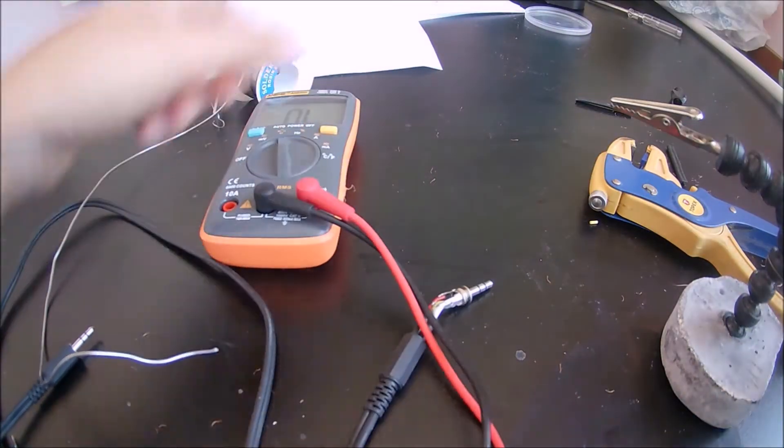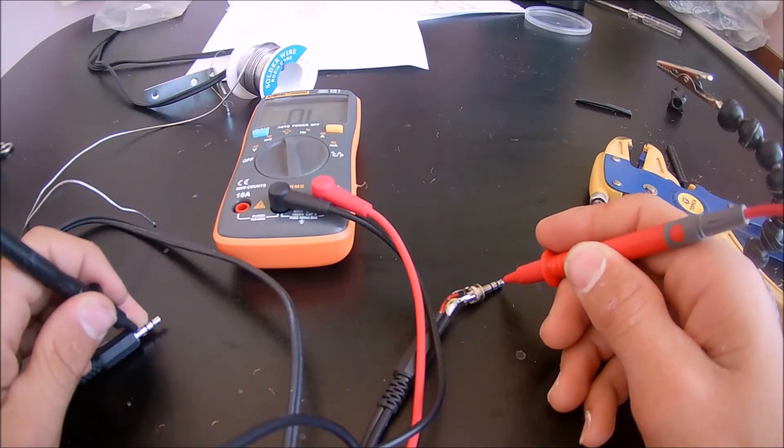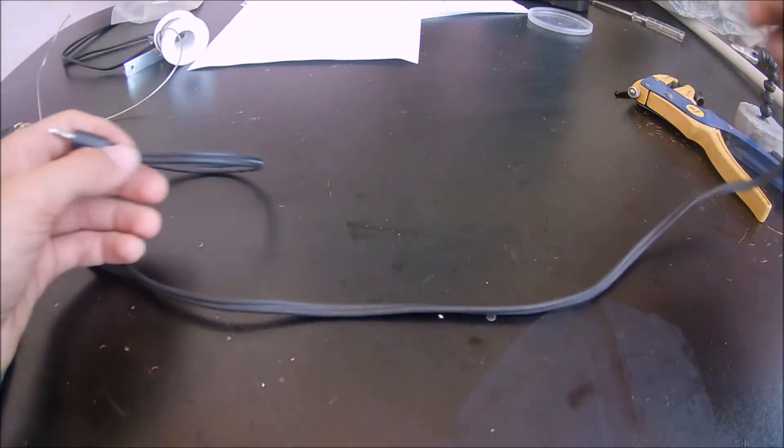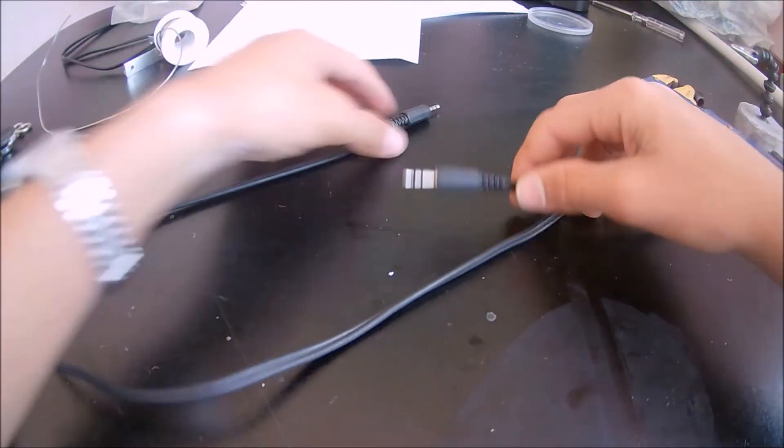And when I was done, before I closed the jacks, I used a multimeter to check if there were any shorts. Then, after I had checked that there weren't any shorts, I screwed on the plastic cover of the jacks.